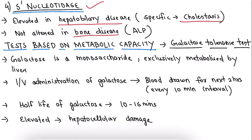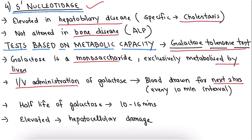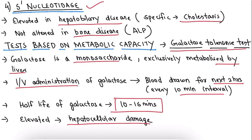Now coming to the test based on metabolic capacity — the galactose tolerance test. Galactose is a monosaccharide that is exclusively metabolized by the liver, which is why it is used for this test. Galactose is given by IV route and blood is drawn over the next 2 hours at every 10-minute interval. The half-life of galactose is 10 to 15 minutes. If galactose is elevated, it indicates hepatocellular damage.